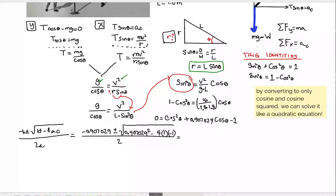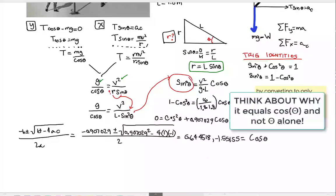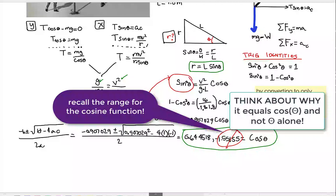That's going to give us two values. We've got the value 0.644518 and negative 1.55155. These are going to equal cosine of theta, not theta. You got to think about it. I'm just speeding by. So you got to stop and think about why it equals cosine theta and not theta alone. Now the other thing is the negative 1.55155. Think about why that cannot be one of our values.